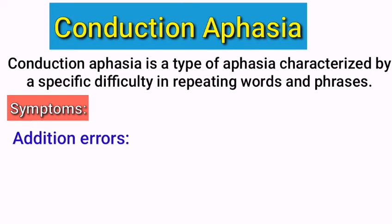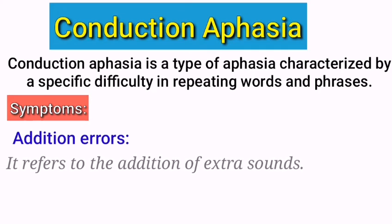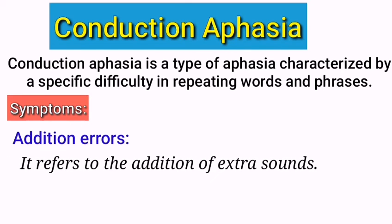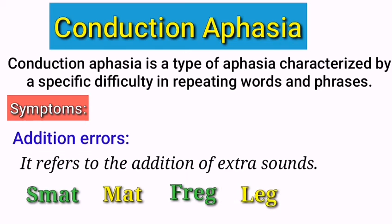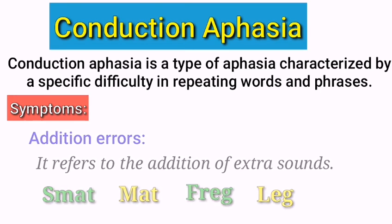Addition errors are another symptom of Conduction Aphasia. It means that an extra sound is added to a word. For example, the person might say 'smat' instead of 'mat', or 'freg' instead of 'leg'. A person with this aphasia will add additional sounds to words.